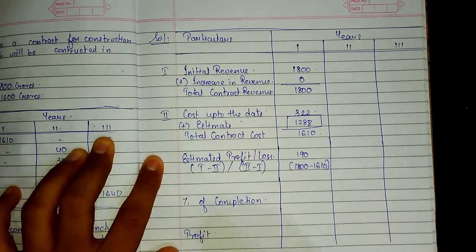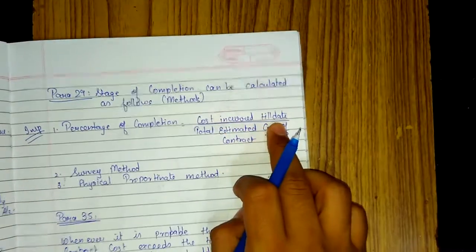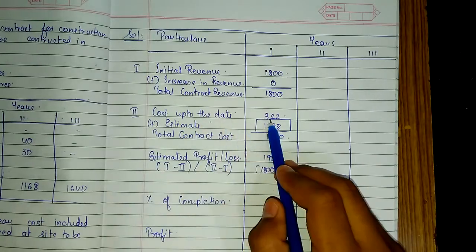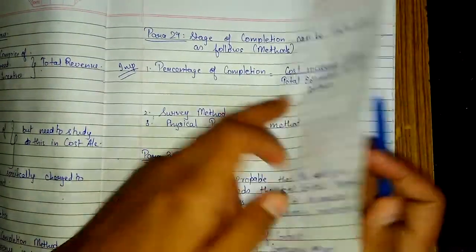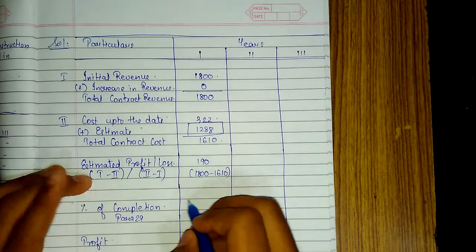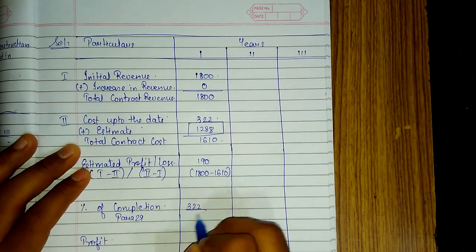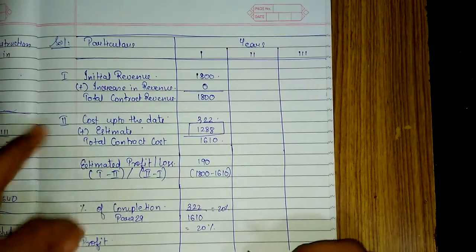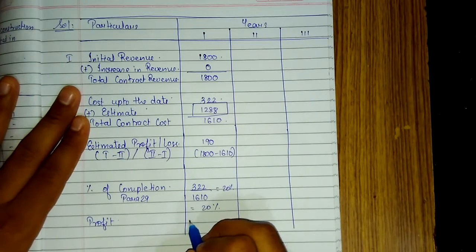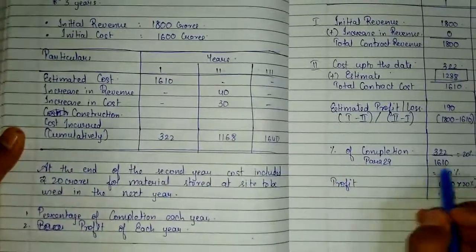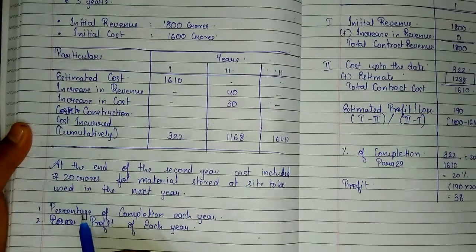Percentage of completion is calculated using the Para 29 formula: cost incurred till date divided by total estimated cost of the contract. So 322 divided by 1610 equals 20%. The profit is 190 crores into 20%, which comes to 38 crores. So percentage of completion is 20% and profit for Year 1 is 38 crores.